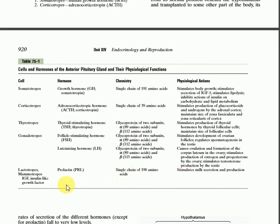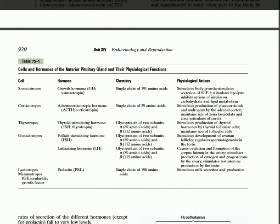The next cells are the lactotrophs, also known as mammotrophs. These are involved in the release of prolactin hormone. The prolactin hormone consists of a single chain of 198 amino acids, and it stimulates milk secretion and production from the mammary gland.